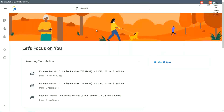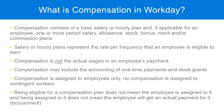We were talking about compensation in Workday. Yesterday we talked about what compensation is in Workday — compensation consists of base salary, hourly plans, allowances, stock plans, etc. It is a rate per frequency. Compensation is not the actual wages in the employee's paycheck because of deductions, and it may include one-time payments and stock grants as well. Compensation is assigned to employees only — no compensation is assigned to contingent workers.